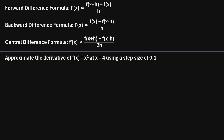In this video, I will explain how to use the forward difference, backward difference, and central difference formulas to numerically approximate a derivative. So let's jump right into an example. Approximate the derivative of f of x equals x squared at the point x equals 4 using a step size of 0.1.